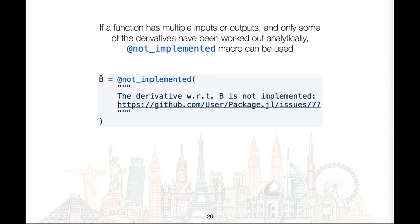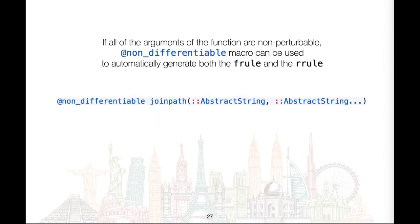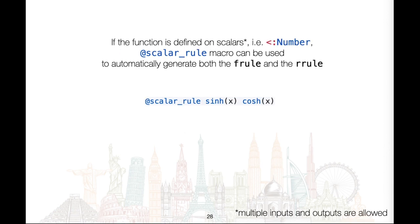@not_implemented macro can be used when a function has multiple inputs or outputs for those tangents that have not been worked out analytically. There are two advantages over a dummy value or throwing an error: it plays nicely with ChainRulesTestUtils, and an informative stack trace is thrown if something attempts to use the dummy value. @non_differentiable macro can be used to automatically generate both the frule and rrule if all arguments of the function are non-perturbable — for example, the join_path function which only takes strings. @scalar_rule macro can be used to automatically generate both the frule and rrule for functions with only scalar arguments, where scalar means a subtype of Number, but there can be more than one argument.